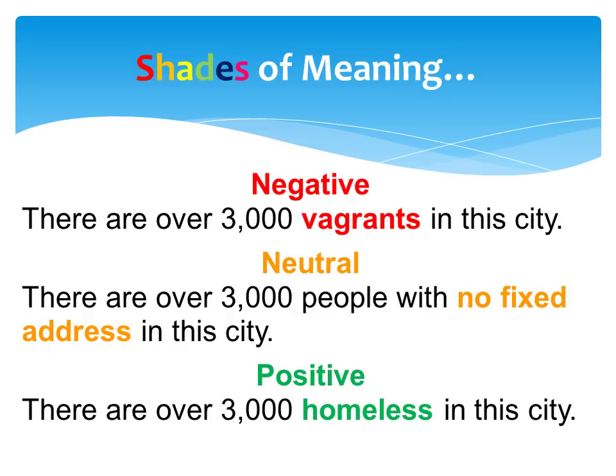A vagrant is often seen as a public nuisance, while a homeless person may have fallen into hard times. Think about how these words can be used to affect the meaning of a sentence. The term vagrant may be used by a politician trying to enact a new law. A teacher may use the term with no fixed address to describe a student in her class. A news reporter may discuss the increasing homeless population on an evening segment. Although the terms have similar denotations or literal meanings, the connotations of the words alter the meaning entirely.